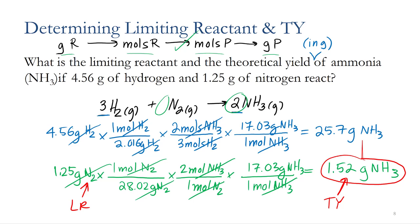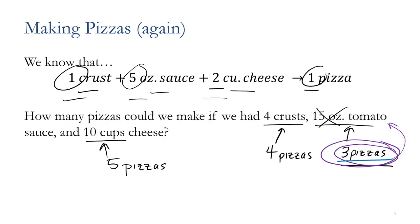In our last example, we determined the amount of ammonia we can make theoretically in grams based on our two reactants. One of the reasons why I wanted to go to grams in this problem is because in the laboratory you're going to want to figure out how much product you actually make. This is just your theoretical yield — the maximum amount possible that you can make. It turns out you're probably not going to make that much product, for a variety of reasons.